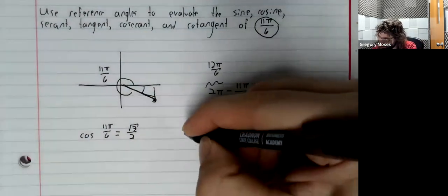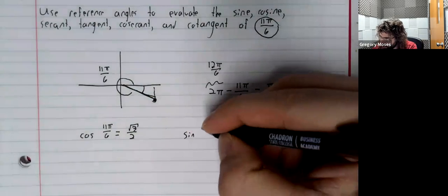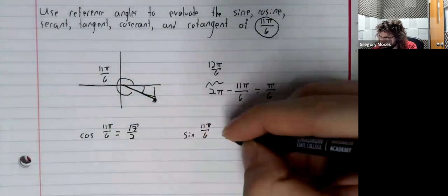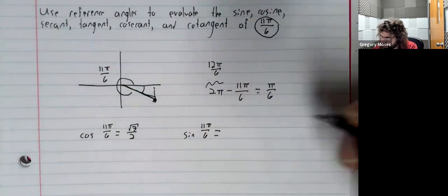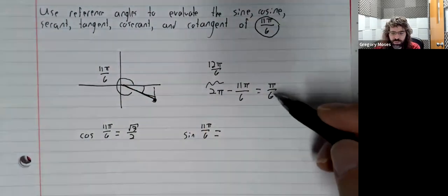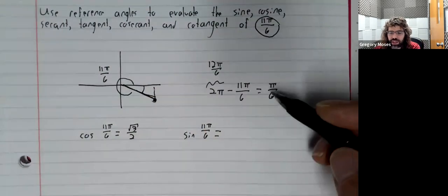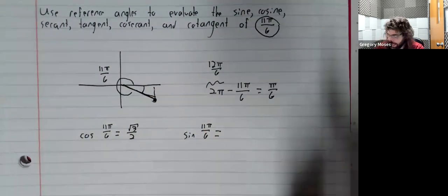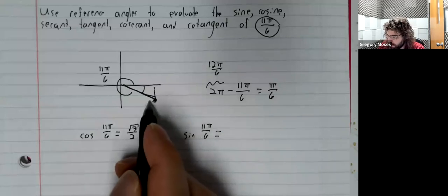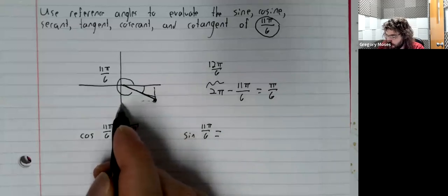Then the sine of 11 pi over 6. Well, the sine of pi over 6 is 1 half. But we're in the fourth quadrant.